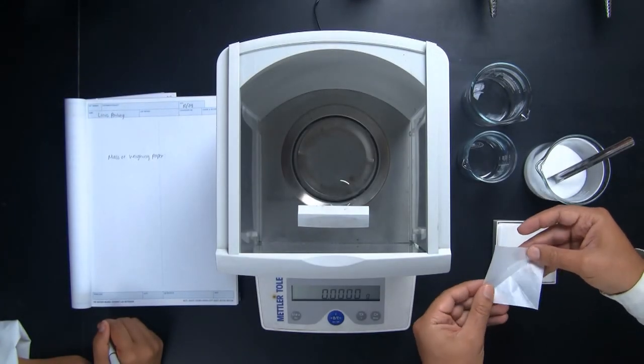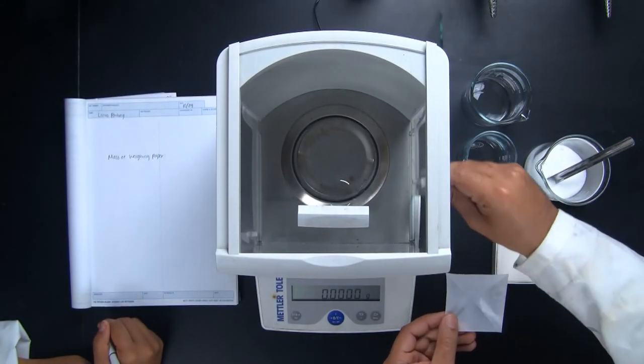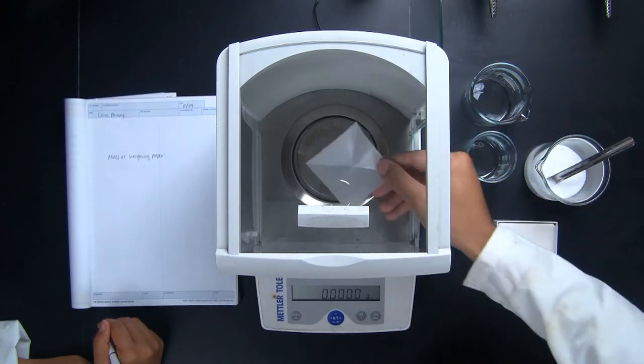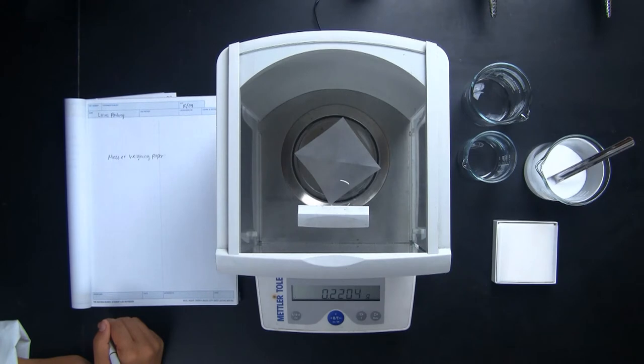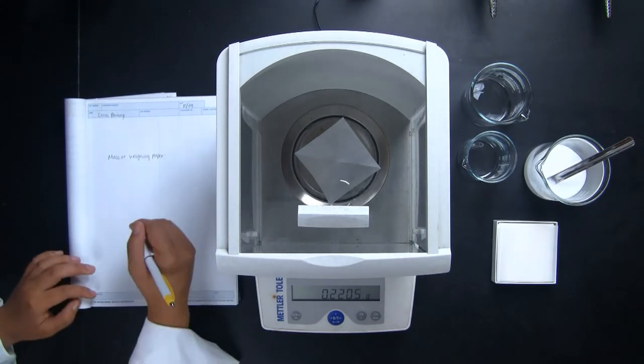To help the reagent stay on the weighing paper, Ash is carefully folding it twice, kind of like a taco, in order to create a pocket for the reagent to stay on the paper and make it easier to manipulate.